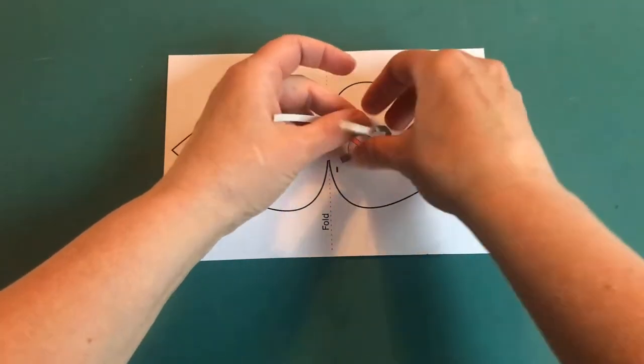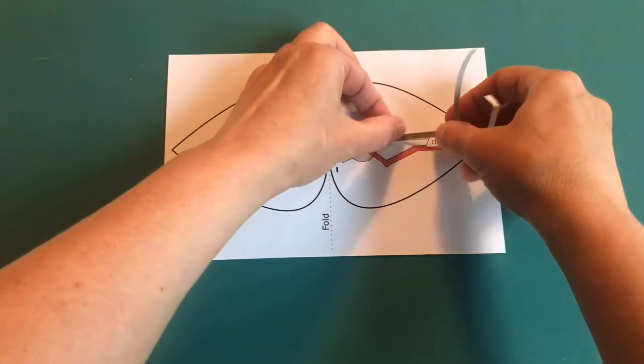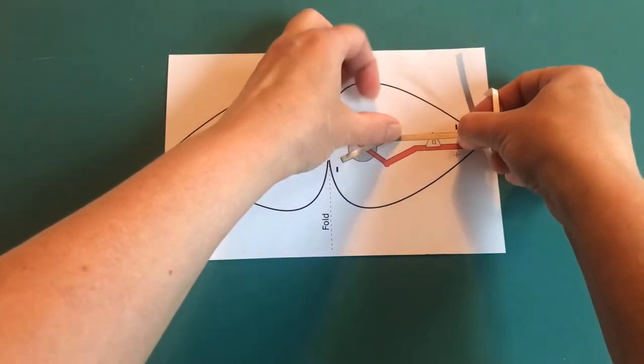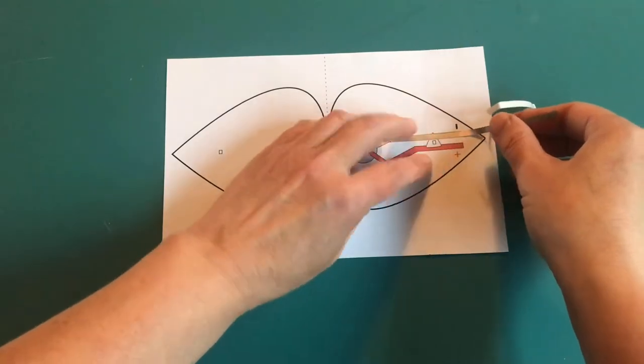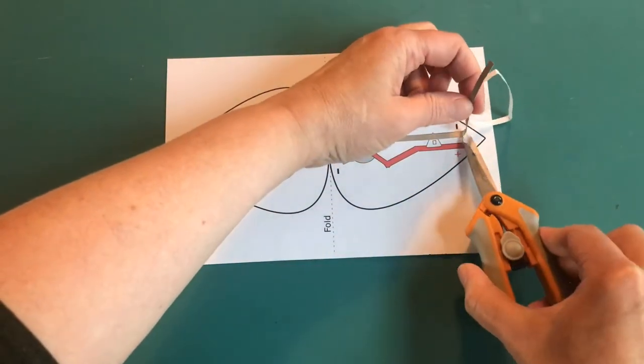You're going to place that conductive tape over the gray mark on your template. And I'm using my thumb to kind of angle the tape in the direction that I want it to go. And when I get to the end, I'm going to use my scissors to cut off the extras so that I can use it later.